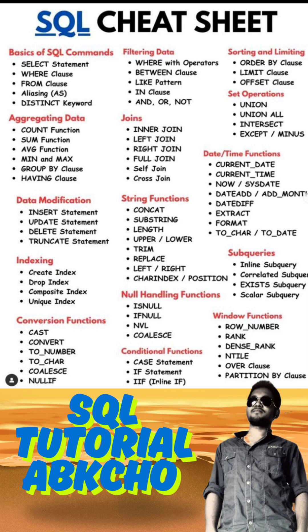And for subqueries we have inline subqueries, correlated subqueries, EXISTS subqueries, and scalar subqueries. And lastly for window functions we have ROW_NUMBER, RANK, DENSE_RANK, OVER clause, and PARTITION BY clause.